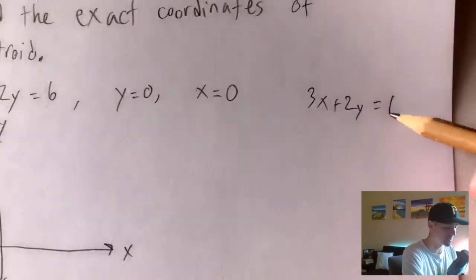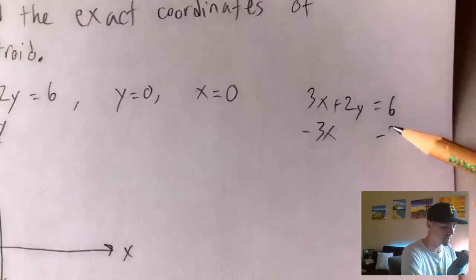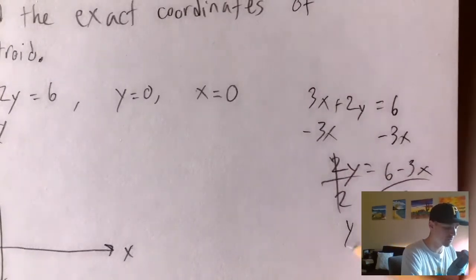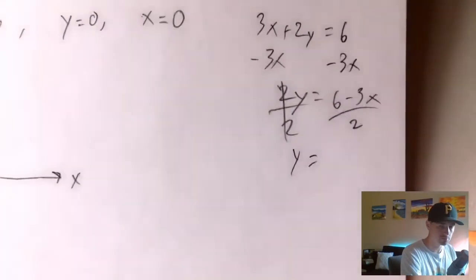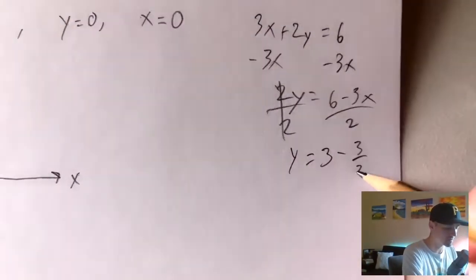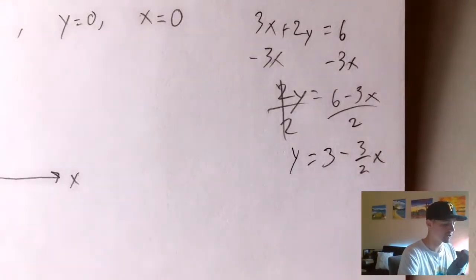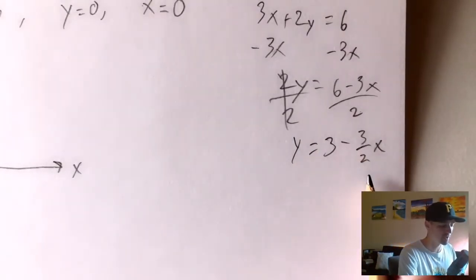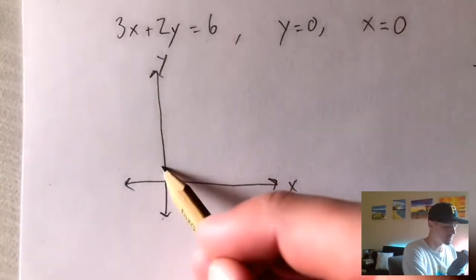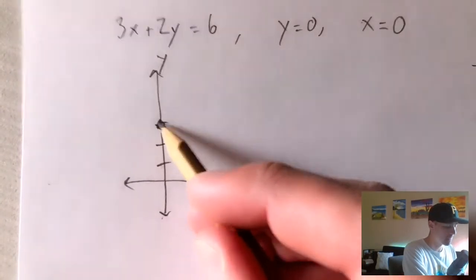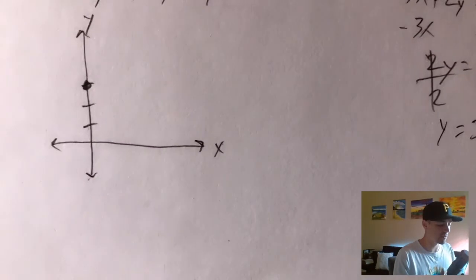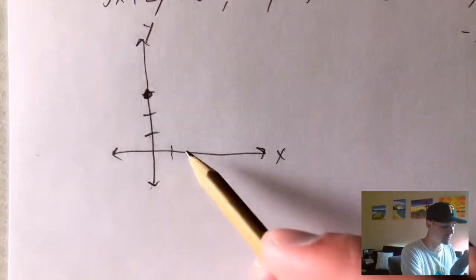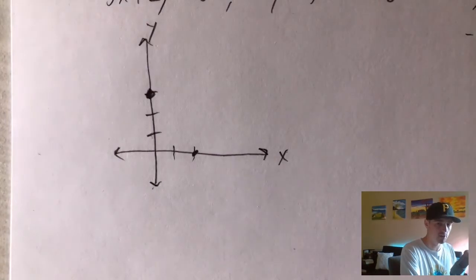We'll have 3x plus 2y equals 6. We'll subtract 3x from both sides and then divide both sides by 2. The 2s will cancel, giving us y equals 6 divided by 2, which is 3, minus 3/2 x. So this is the function we want to graph — a linear function with a y-intercept of 3 and a slope of negative 3/2. So we'll go up to 3, then down 3 units and over 2 units to the right, giving us a line through those two points.